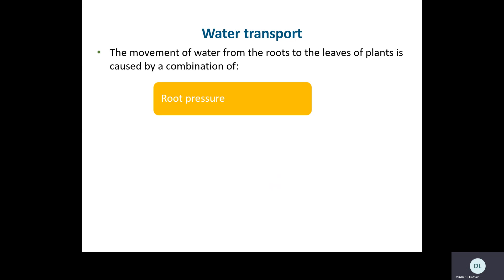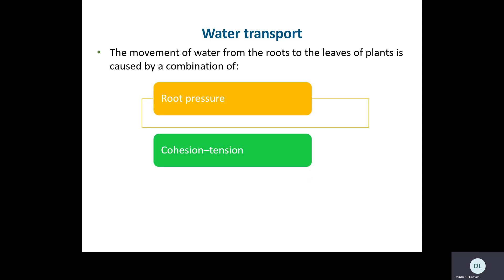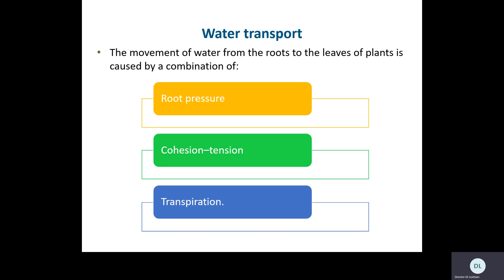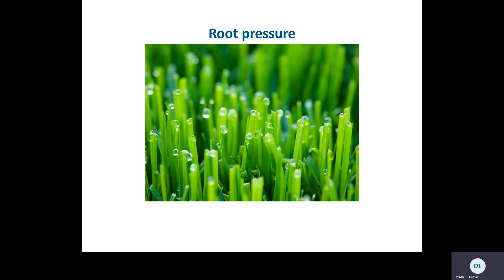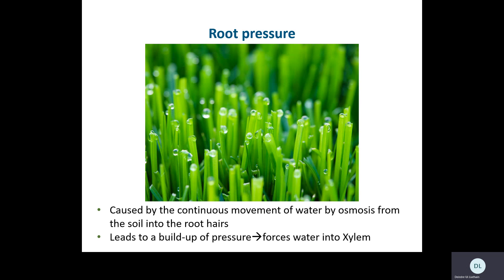The transpiration stream happens through a combination of three important processes: root pressure, cohesion tension, and transpiration. Root pressure first: when water travels into the roots of a plant, it causes a buildup of pressure. There's a buildup of water inside the root hairs, forming a column of water that keeps forcing water upwards into the xylem. Water naturally moves into the root hairs by a process called osmosis — the movement of water from an area of high water concentration to an area of low concentration.